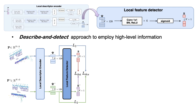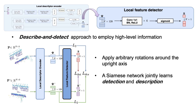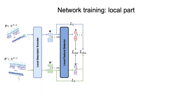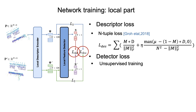To train the local part of our model, we use a Siamese structure. We generate training pairs by applying arbitrary rotations around the upright axis to the point clouds. The detector and the descriptor are jointly trained using two separate loss terms. For the descriptor loss, we adopt n-tuple loss to pull positive pairs close and keep enough distance between negative pairs. As for the detector loss, since there is no standard definition of a keypoint for outdoor point clouds, we train the model in an unsupervised manner. To do this, we propose a new metric called average successful rate.